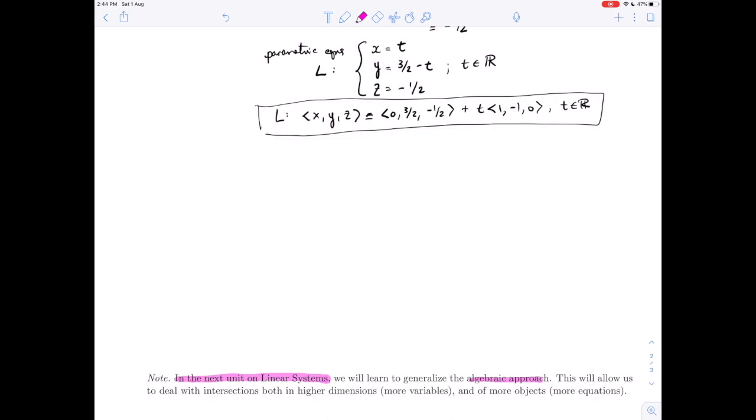In your next unit on linear systems, you're going to generalize this method. You're going to generalize the algebraic approach. That will let us deal with intersections both in higher dimensions, meaning with more variables, not just x, y, z, but any number of variables, and more equations, not just two like we did here, but any number of equations.